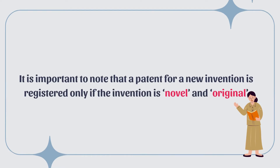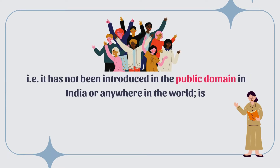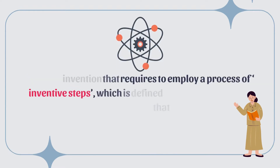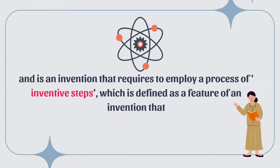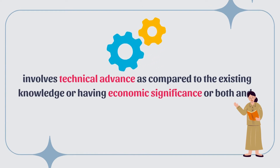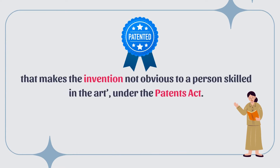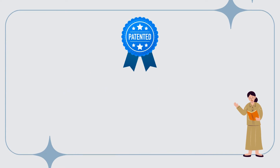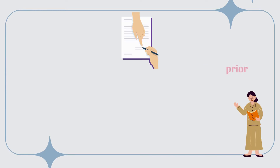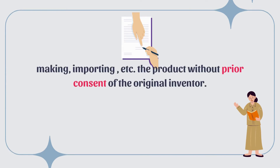A patent for a new invention is registered only if the invention is novel and original — that is, it has not been introduced in the public domain in India or anywhere in the world — is capable of industrial application, meaning the ability of the invention to be used in an industry, and involves inventive steps, defined as a feature that involves technical advance compared to existing knowledge or having economic significance or both, and that makes the invention not obvious to a person skilled in the art.